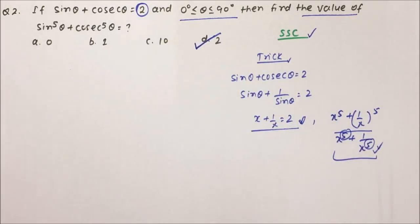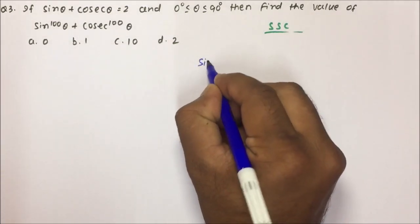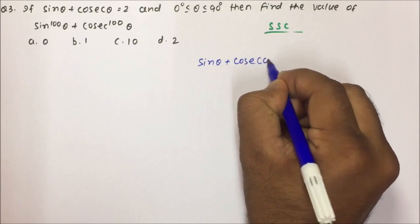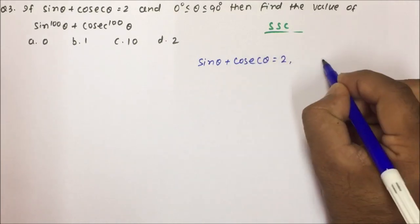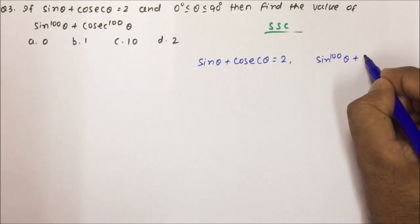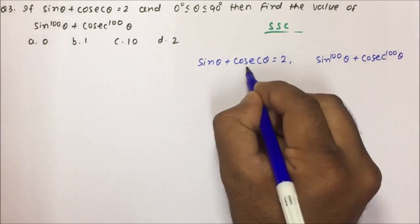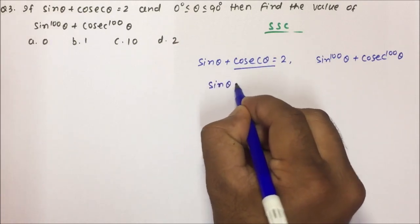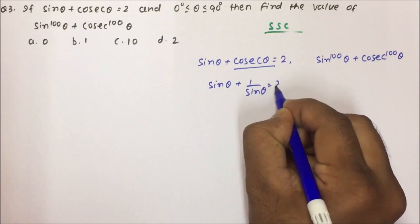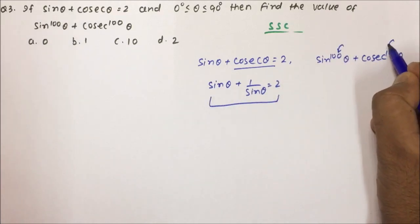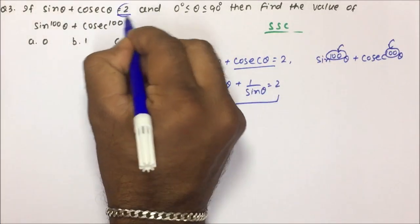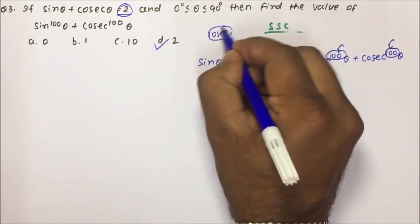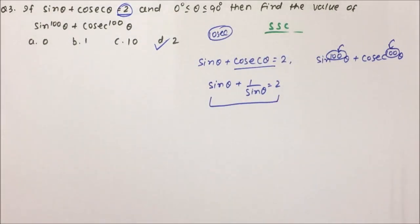A similar type of question is number 3. Here, sin θ + cos θ = √2 and you have to find sin¹⁰⁰θ + cos¹⁰⁰θ. Again, sin θ + 1/sin θ is in the same form x + 1/x = 2, and the power is the same on both sides, so your answer will be nothing but 2. This kind of question has been asked in SSC more than 6 to 7 times and the answer will always be the same. Keep these tricks in mind and you will definitely excel in your exam.